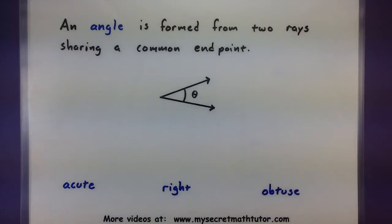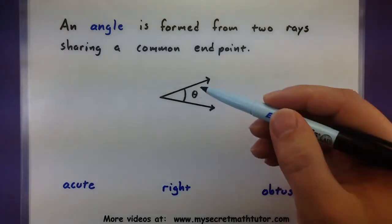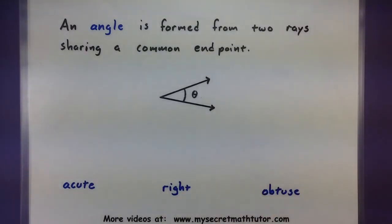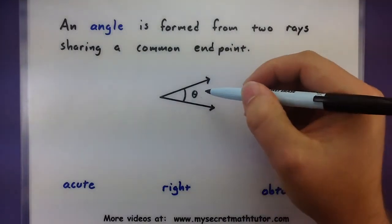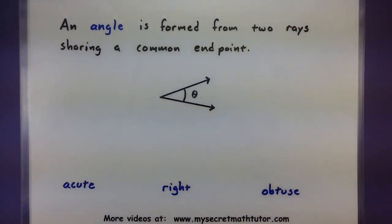Now, there's all kinds of different types of angles, and it depends on how big this angle is. Angles can usually be measured in degrees, radians, or grads. And again, it all depends on how big it is, whether we call it acute, right, or obtuse.